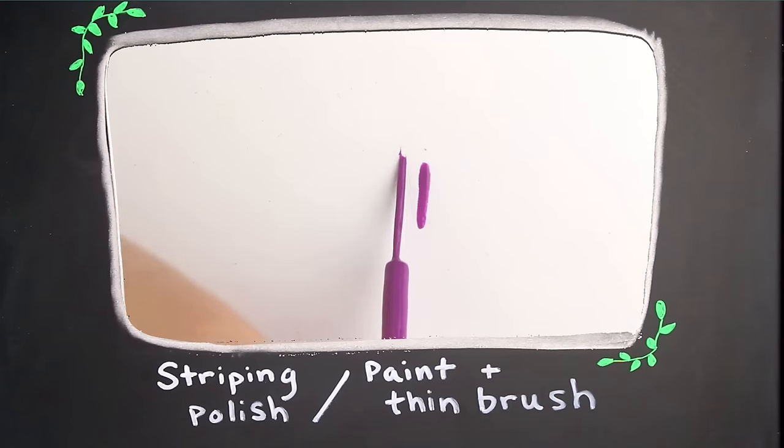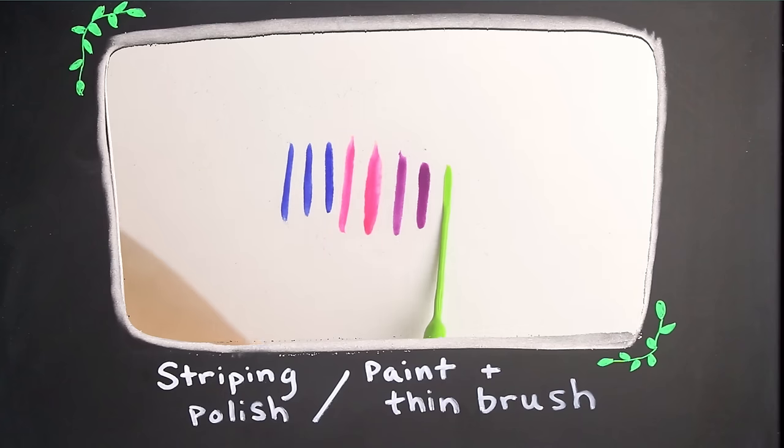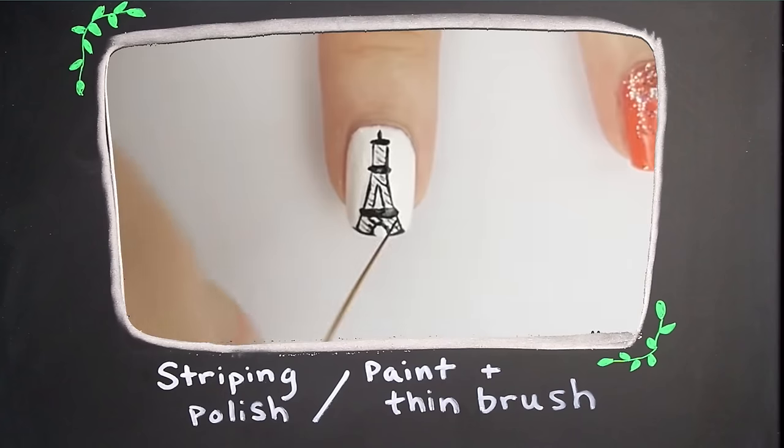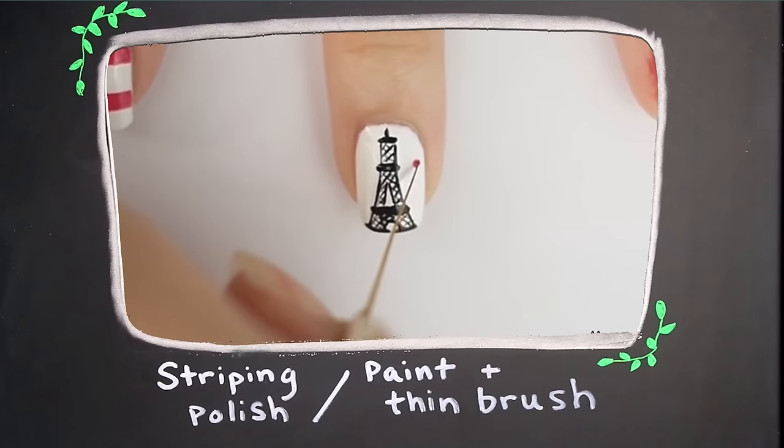If you want, you can use acrylic paint. It's easy to work with, it's cheaper than nail polish, and it's easy to mix your own colors. Just apply top coat and you're good. I bought my Orly water-based stripers online, but you can also get them from Walmart from the brand Salon Perfect.